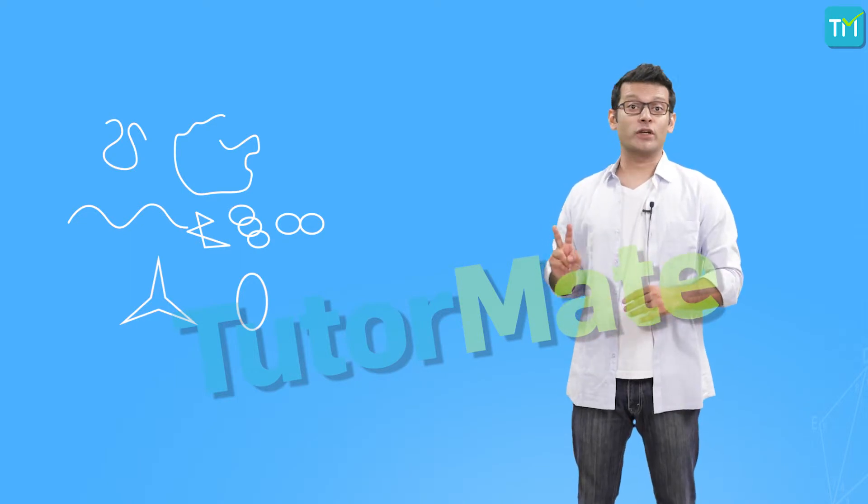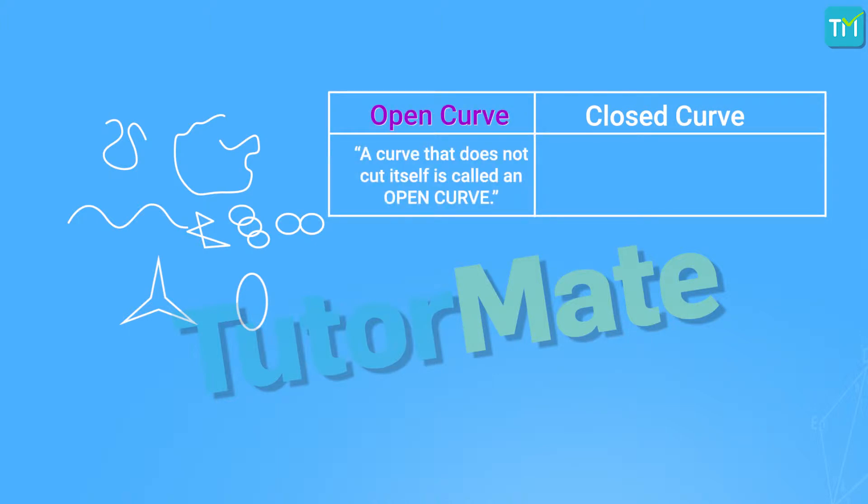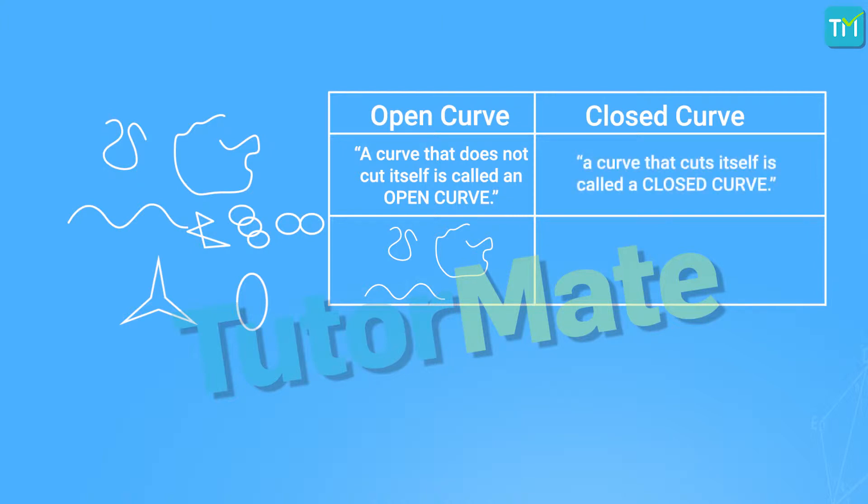Now, we can divide curves into two broad categories, open curves and closed curves. A curve that does not cut itself is called an open curve. So, can you identify open curves from these figures? Right, these are all open curves since they do not cut or cross over. At the same time, a curve that cuts itself is called a closed curve. Let's try and identify the closed curves from the figures here.